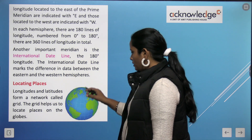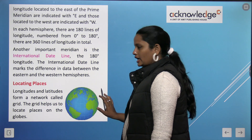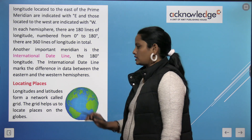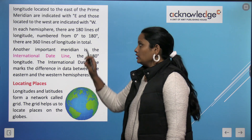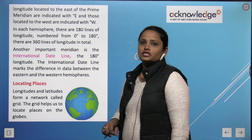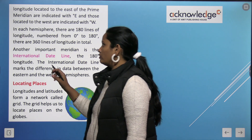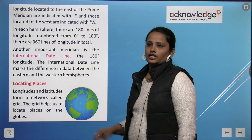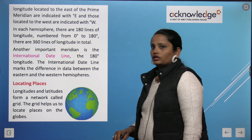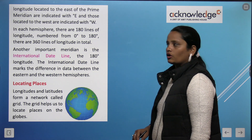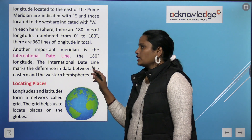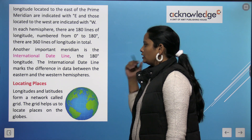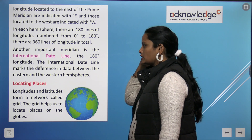If you look at one meridian — there are 180 lines on one side and 180 lines on the other side, making 360 total lines of longitude. Another important meridian is the International Date Line at the 180° longitude. The International Date Line marks the difference between the eastern and the western hemisphere.